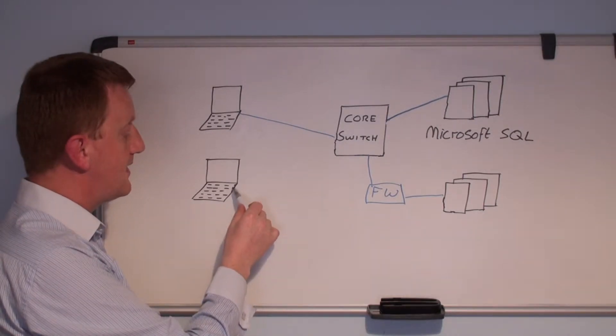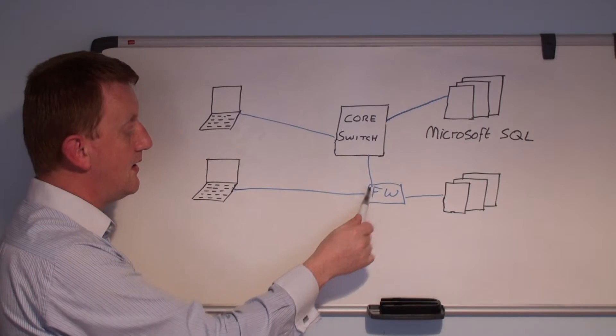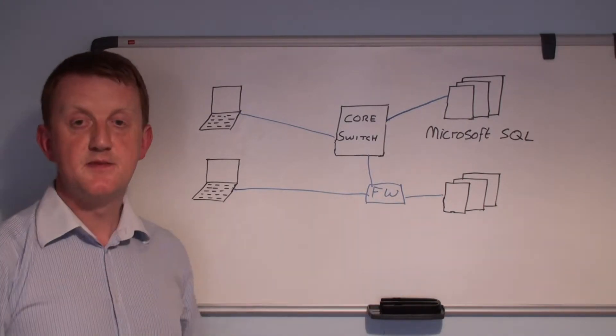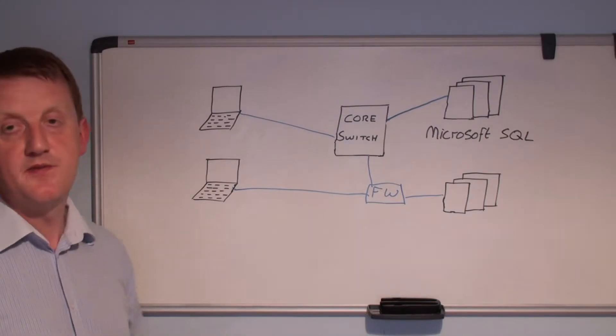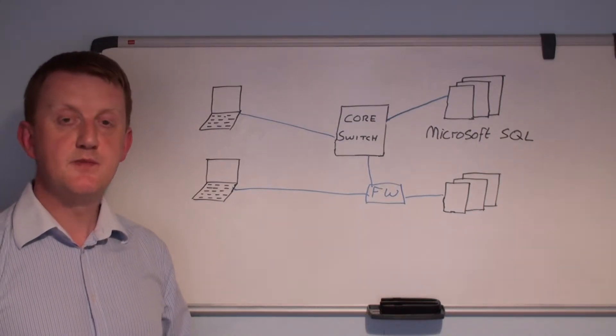We may have external users connecting through the firewall onto web applications which we may have hosted on our DMZ. So there's a number of ways we can find out what people are accessing within the databases.